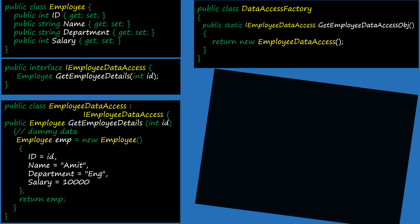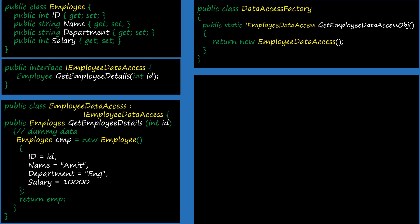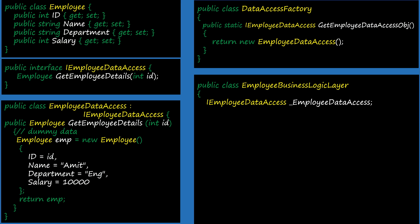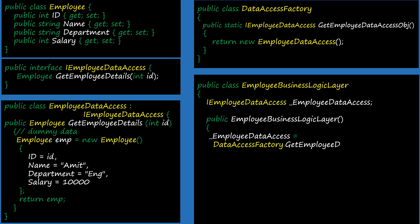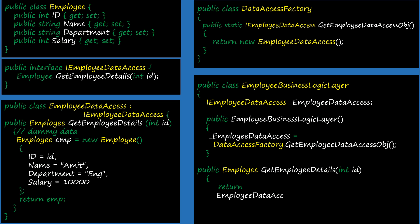The last class we need to modify is EmployeeBusinessLogicLayer. The changes here: instead of creating an object of EmployeeDataAccess, we now create an object of IEmployeeDataAccess. So our class is not aware at compile time which class it will actually call at runtime. Similarly, in the constructor we assign the employee data access variable using DataAccessFactory.getEmployeeDataAccessObj(). Then we create the getEmployeeDetails method, which returns the employee object using employeeDataAccess.getEmployeeDetails(id). Our code adhering to the Dependency Inversion Principle is ready.